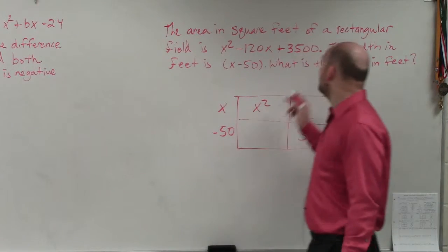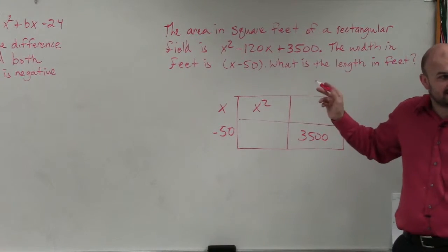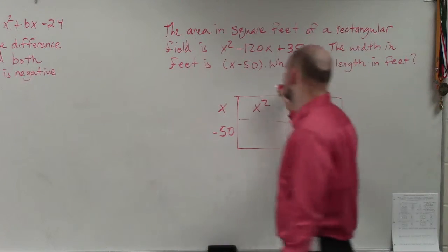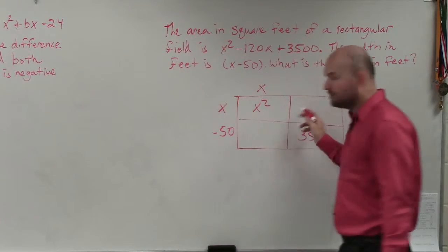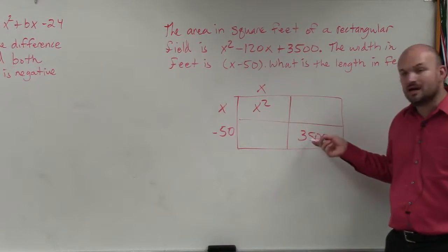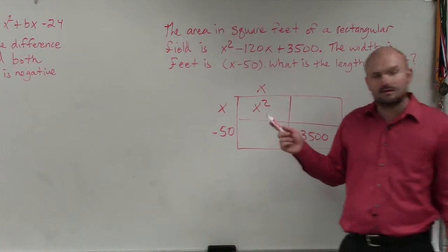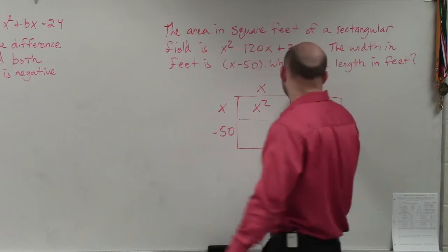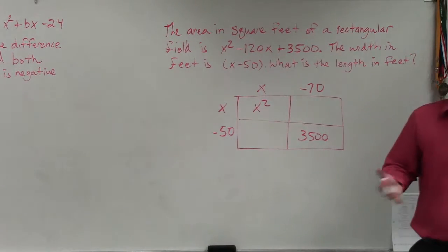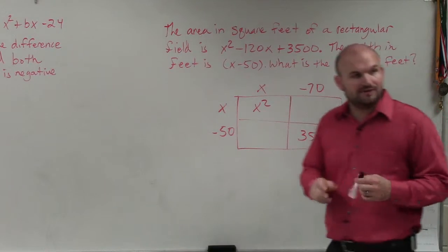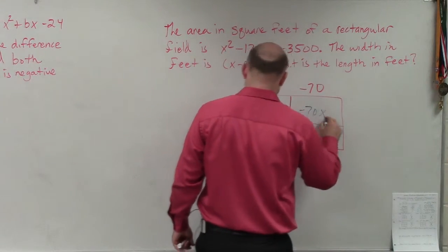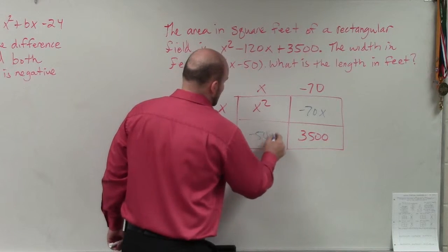So all they're asking is: what is the length? x times what gives you x squared? x. Now, I don't know what these middle two boxes are, but I can think of: negative 50 times what gives you 3,500? Negative 70. So I can fill in the rest of the box — negative 70x here, and negative 50x here.